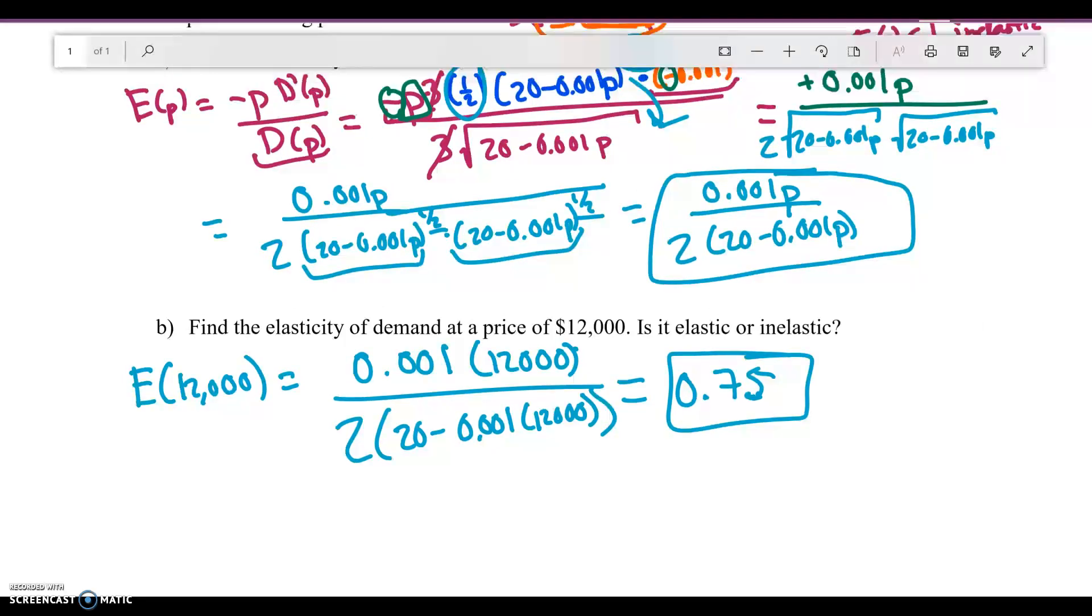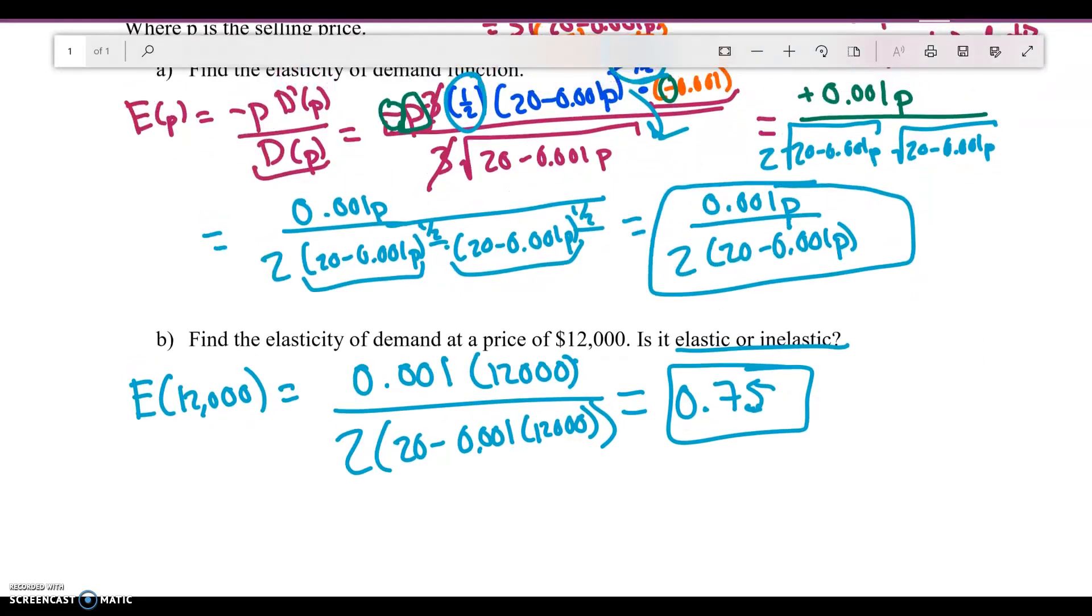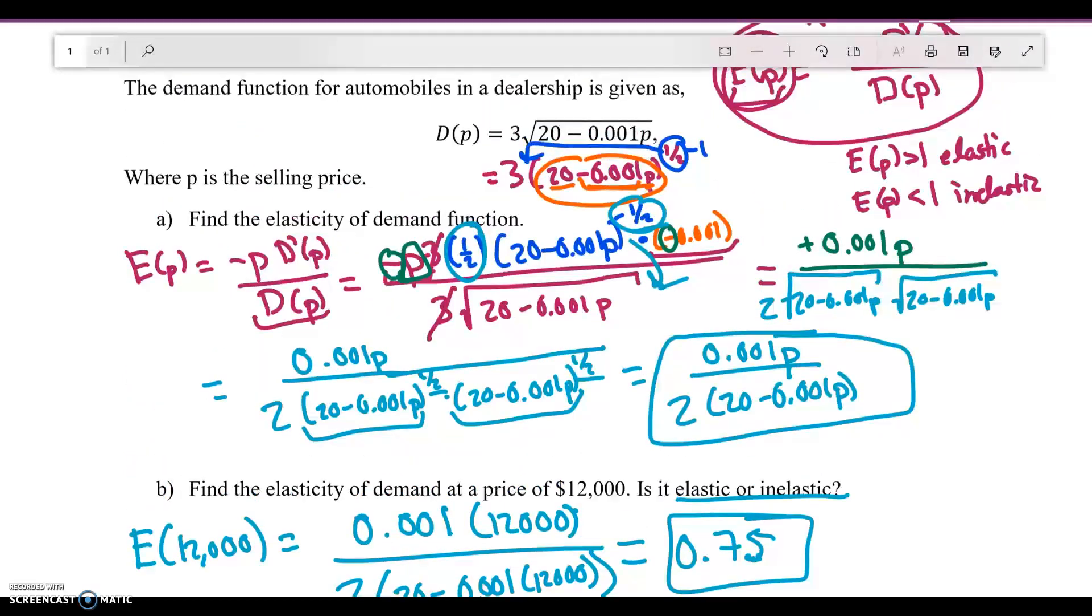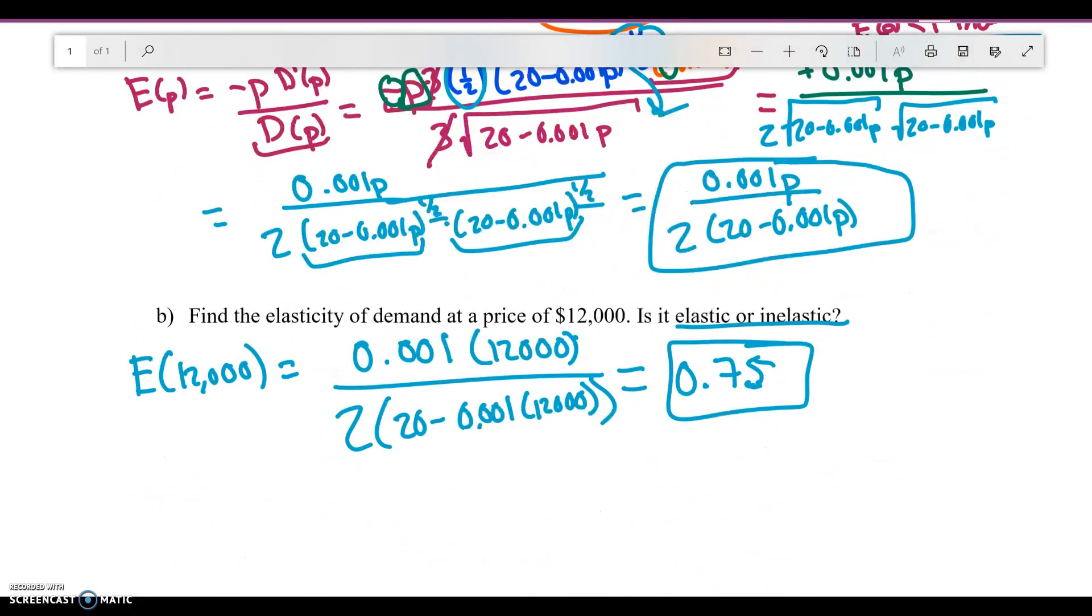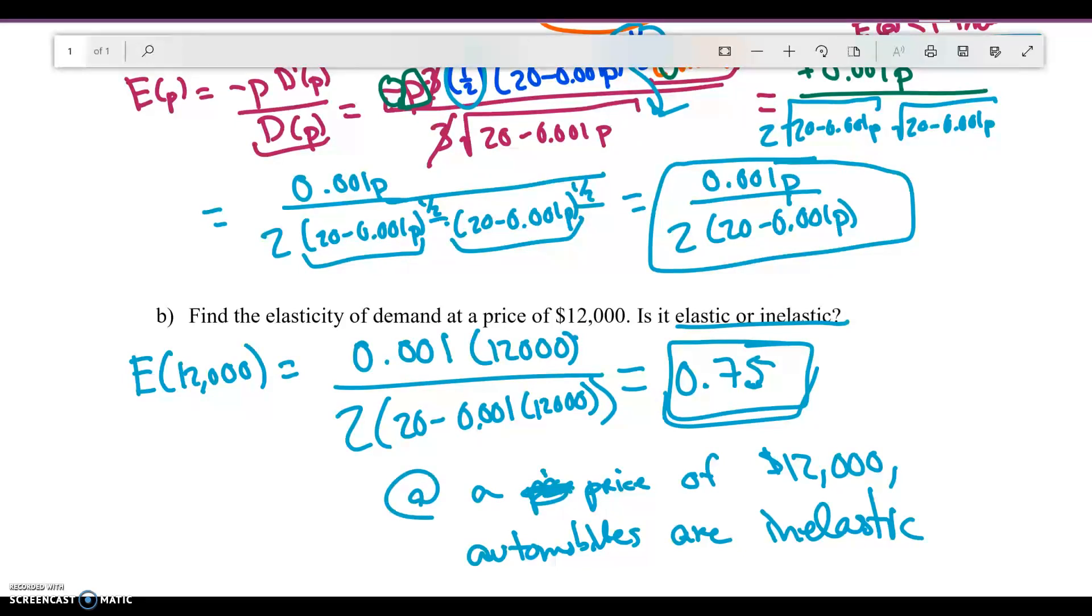Now the question here asked me, is it elastic or inelastic? Well, 0.75 is less than one. So at this price, at a price of $12,000, automobiles are inelastic. Because our inelastic number or our number is just 0.75, which is less than one.